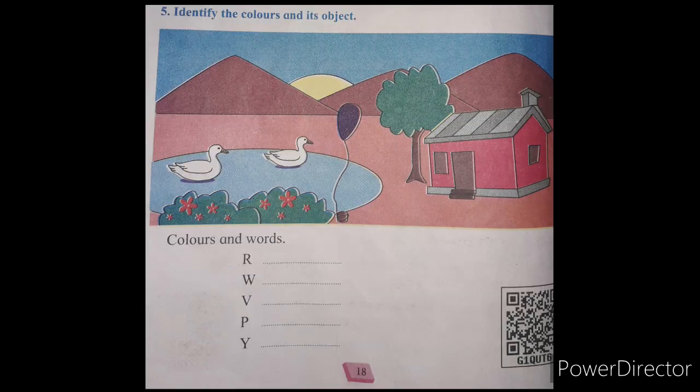On page number 18, question number five: identify the colors and their objects. The first letters of the color names are given and you have to find which color it is and write the object. R means red — very good, red flowers! Write 'red flowers' in front of it. W means white.